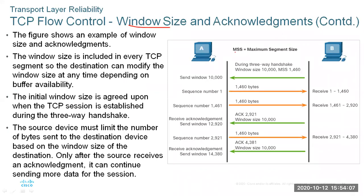The window size relates to the maximum segment size (MSS). The window size is included in every TCP segment so the destination can modify it at any time depending on the available buffer. During the three-way handshake, a window size of, say, 10,000 is announced. The common MSS is 1460 bytes, while most technologies use 1500. The initial window size is agreed upon when the TCP session is established, and the source device must limit bytes sent based on the window size.